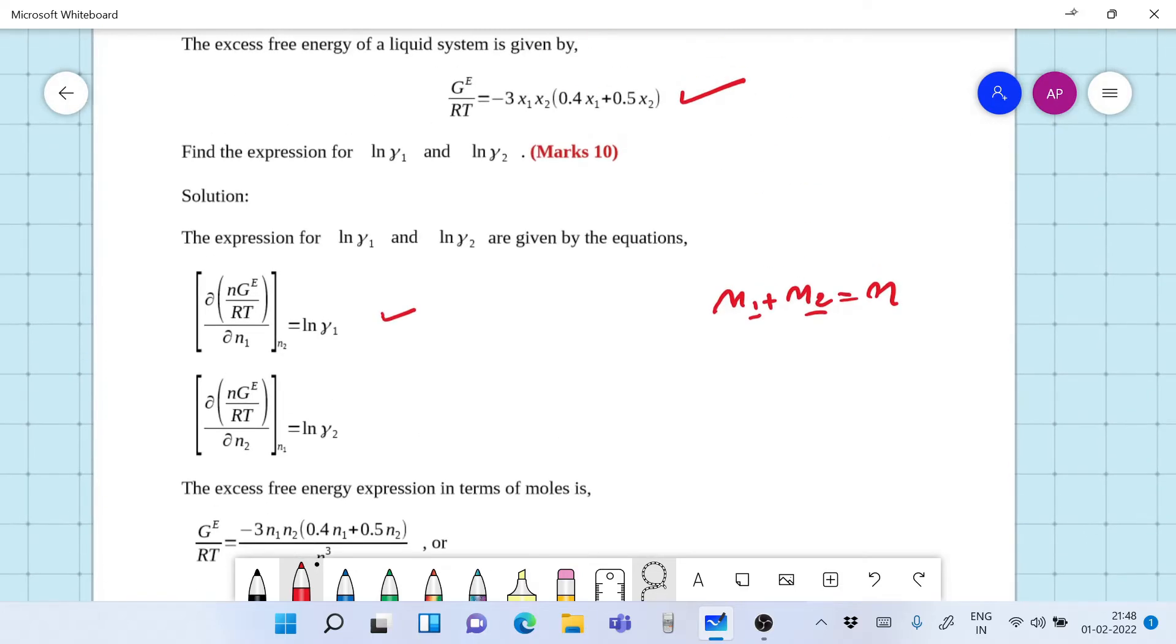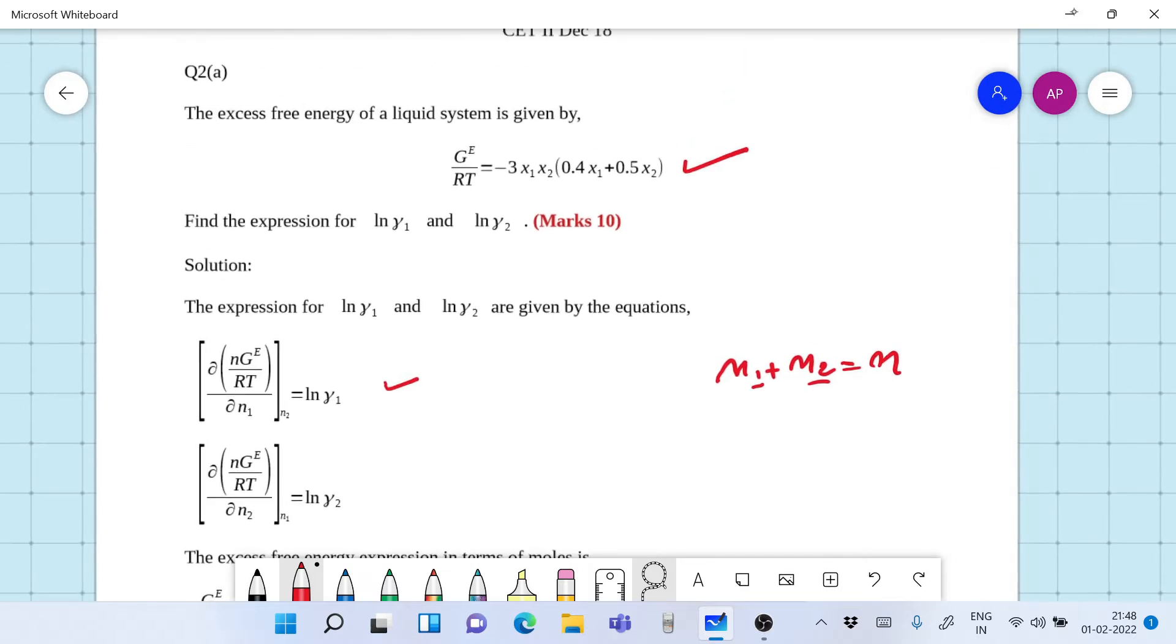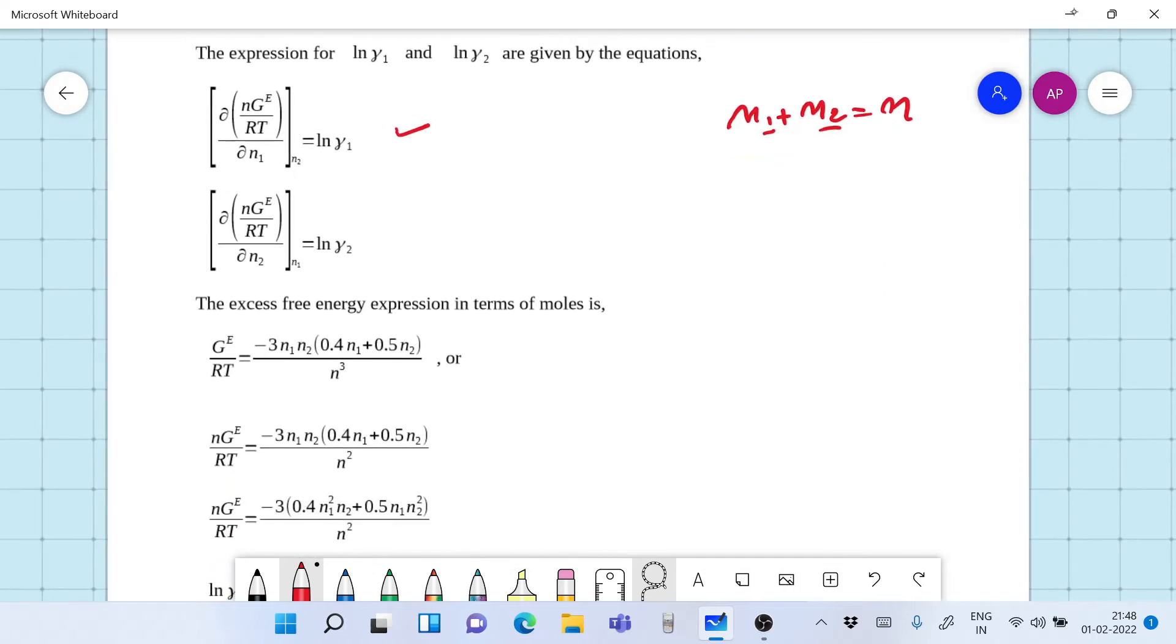The expression for excess Gibbs free energy is given in x1 and x2. Now most of the students do a mistake by differentiating this directly. It is wrong. Do it as shown. The first thing that you need to do is write x1 and x2 in terms of n1 and n2.